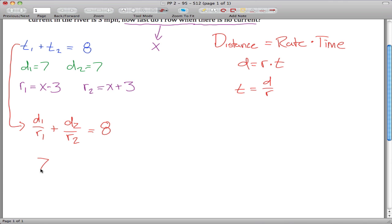And D1 is seven, R1 is X minus three, D2 is seven, R2 is X plus three, and that's equal to eight.